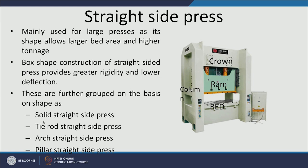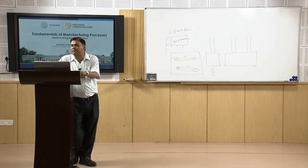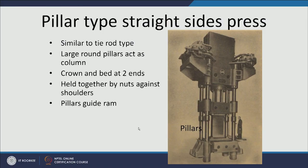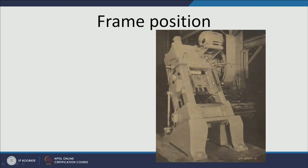Classifications of straight-sided presses include: solid straight-side press, tie-rod straight-side press, arc straight-side press, and pillar straight-side press. Pillar-type straight-side presses are normally hydraulically operated and used for very high capacity or very high tonnage. Classification based on frame position covers vertical, inclined, and horizontal presses.